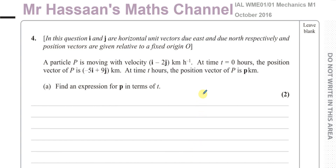Okay, welcome back. This is Mr. Hassan's maths channel. I'm now answering question number four from the October 2016 International A-Level Edexcel Mechanics M1 exam. This question is about vectors. It tells us that i and j are horizontal unit vectors due east and due north respectively, and position vectors are given relative to a fixed origin O, as it does in all these vector type questions.